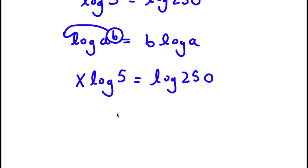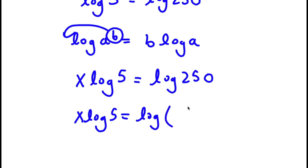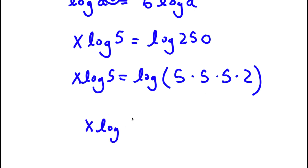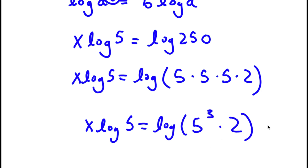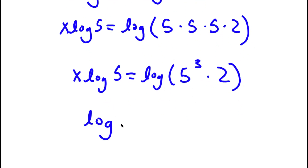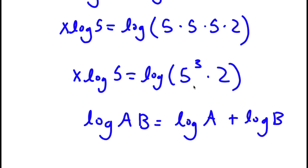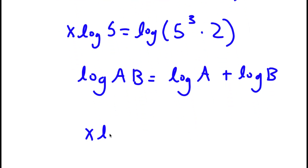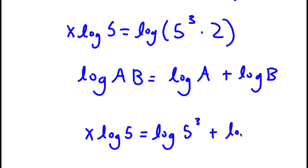Now, 250 is the same thing as 5 times 5 times 5 times 2. And 5 times 5 times 5, I can rewrite as 5 to the power of 3 times 2. If I have something in the form log a times b, this is equal to log a plus log b. So I have log 5 to the power of 3 times 2, and I can rewrite that as log 5 to the power of 3 plus log 2.